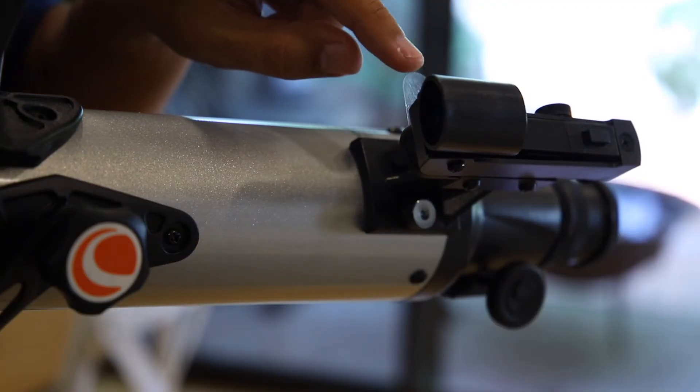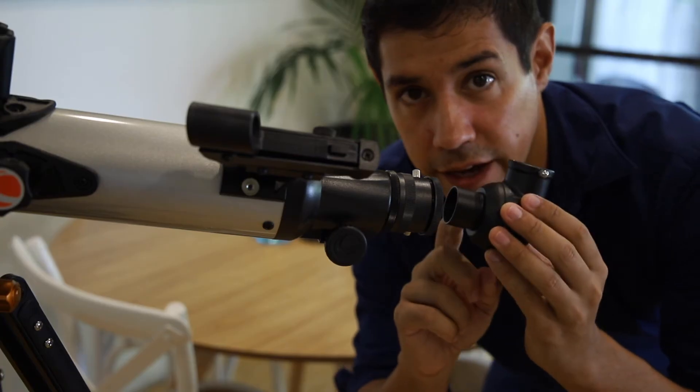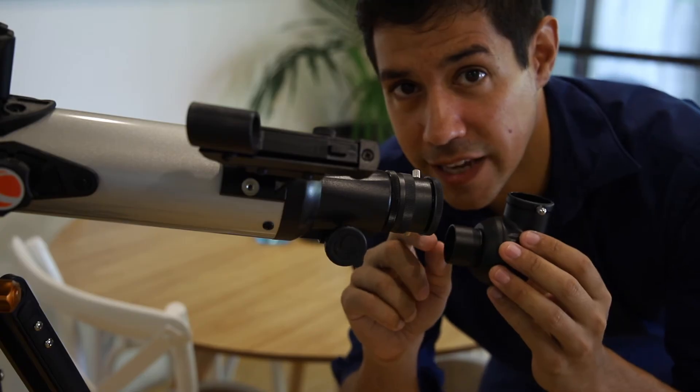Don't forget to remove the small plastic tab so the battery makes contact. Now add the diagonal and a 25mm eyepiece at the end.